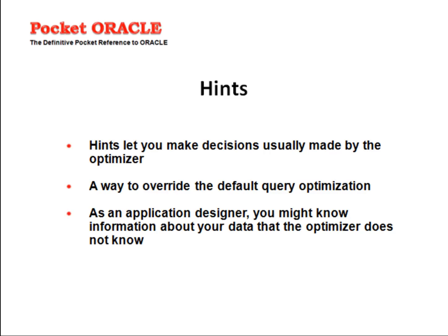First, let's see what hints are. Hints let you make decisions which are usually made by the optimizer. Hints are a way to override the default query optimization. As an application designer, you might know more information about your data than the optimizer would know.